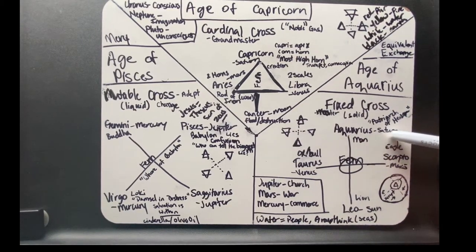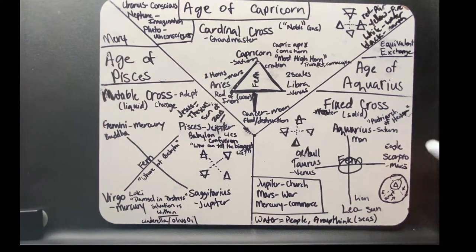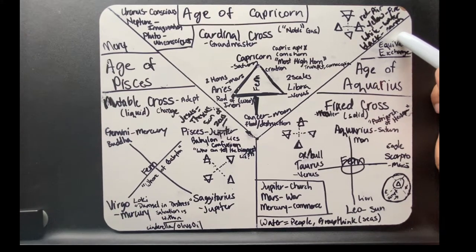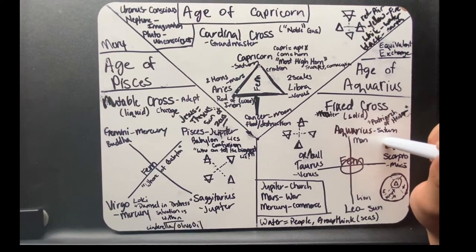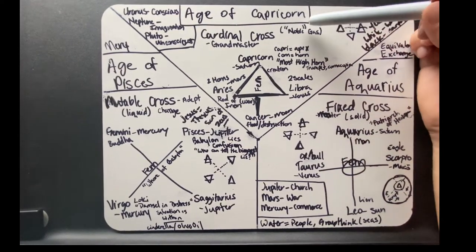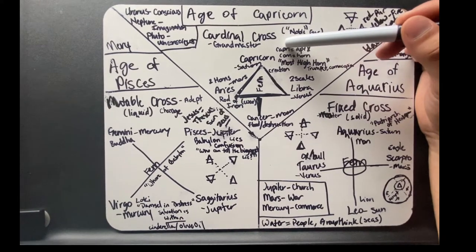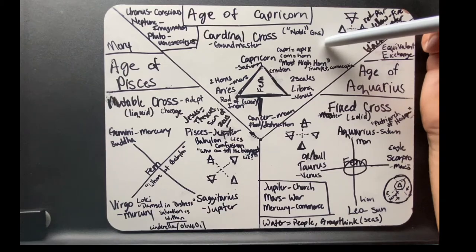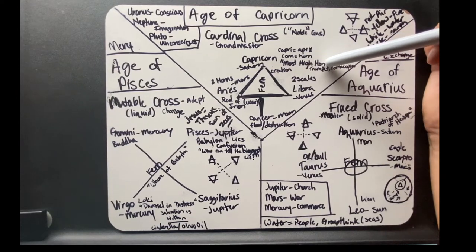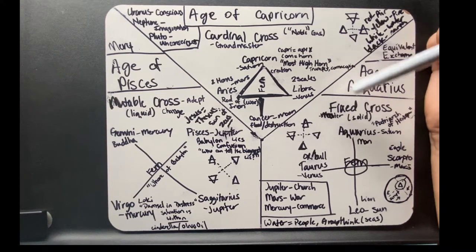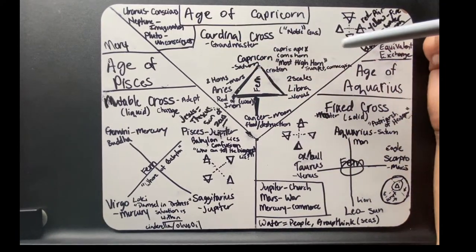Age of Aquarius is ruled by Saturn, so we're going from the Age of Mercy. We have this age, the age of the law of equivalent exchange, the law of karma. You reap what you sow. Then we flow into the Age of Capricorn's grandmaster, the cardinal cross. Capri means apex, like a caprice, and corn, like cornucopia, means horn. So Capricorn is the most high horn. This is like bringing heaven on earth. That's how these two work together.